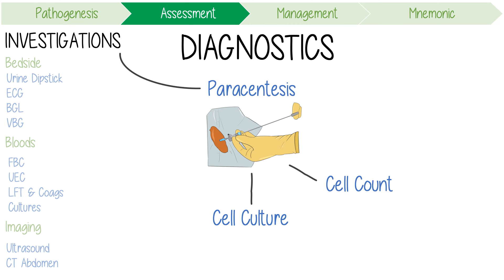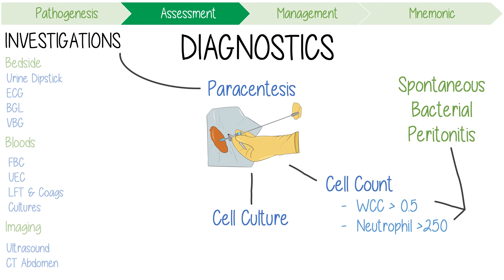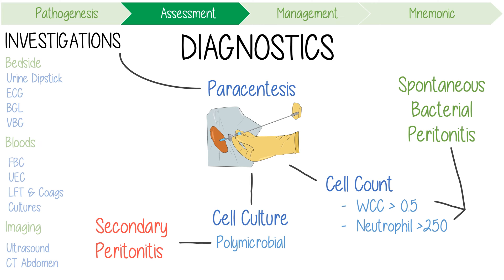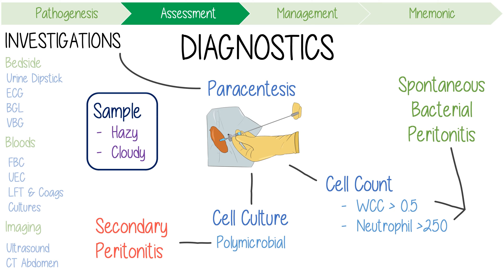This is the most important part: if the total white cell count is more than 0.5 × 10⁹/L or the neutrophil count is more than 250 cells per cubic millimeter, this is diagnostic of spontaneous bacterial peritonitis and should prompt immediate management. While bacteria are rarely detected on gram stain, a polymicrobial growth from the peritoneal fluid is highly indicative of secondary peritonitis. You should also always examine the sample appearance, as cloudy or hazy fluid indicates SBP with a relatively high sensitivity.